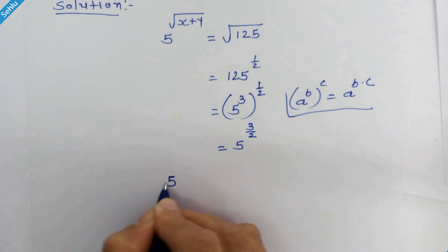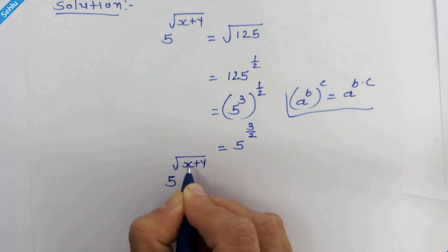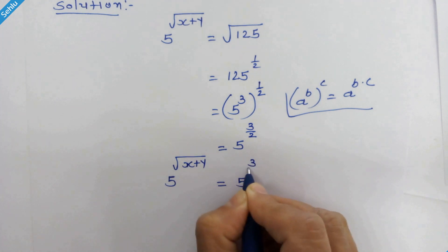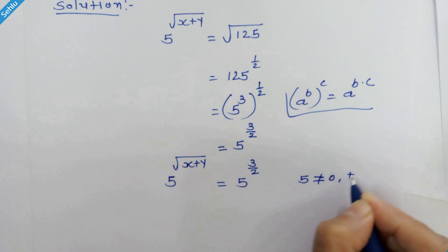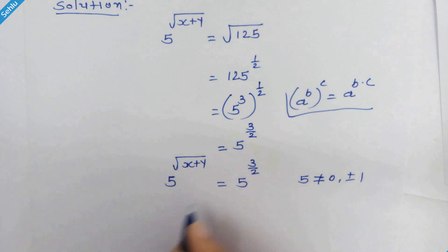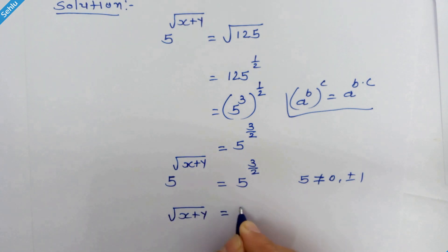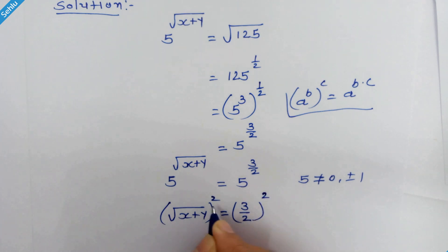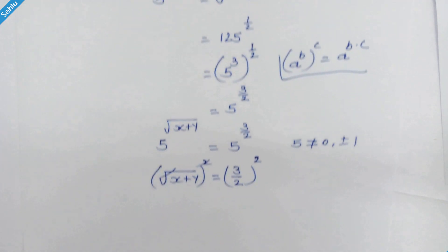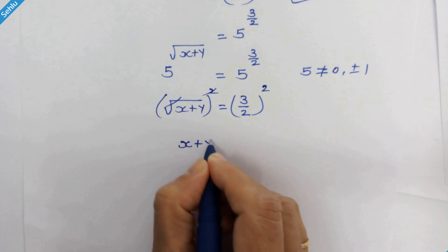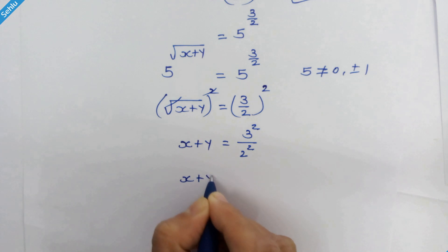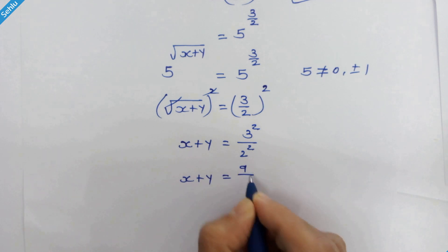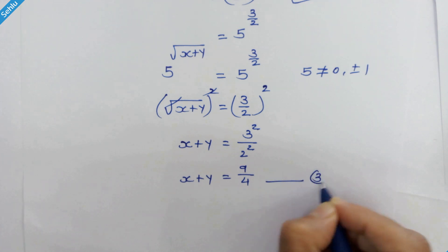So 5 raised to √(x+y) is equal to 5 raised to 3/2. We have the same base on both sides, and since 5 is not equal to 0 or ±1, we can equate their exponents. So √(x+y) = 3/2. Squaring both sides, the square and square root cancel out, giving us x + y = 9/4. Let's call this equation number 3.